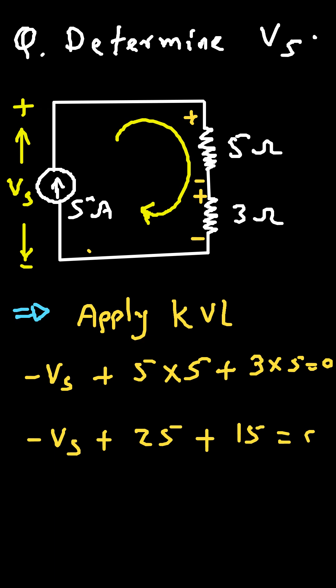Now we can take this on this side, so it will be plus Vs. So Vs is equal to 25 plus 15, so this will be 40.